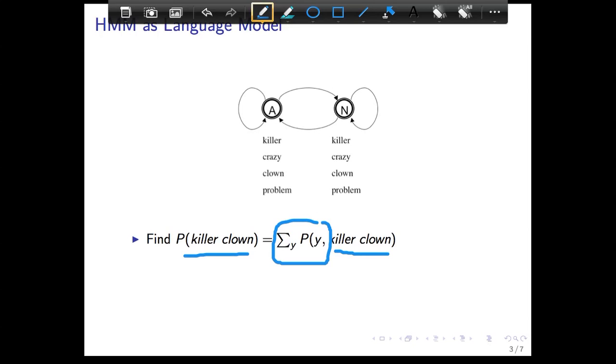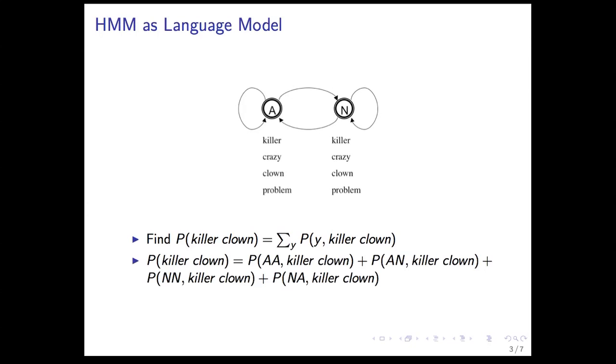So every possible sequence, we're adding up all the probabilities and that gives us the language model score.